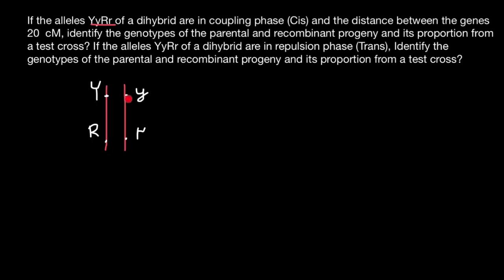Here we also have two recessive alleles — we call this also cis form. But if instead we have dominant allele Y and recessive allele R on one chromosome, and dominant allele R and recessive Y allele on the other, then this is the trans form. So this chromosome would be trans and this chromosome also would be trans.